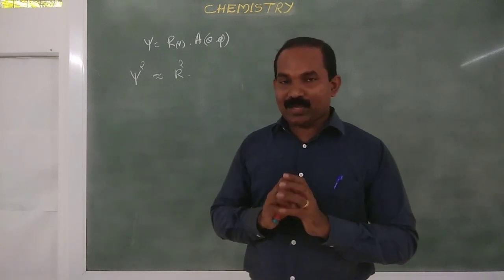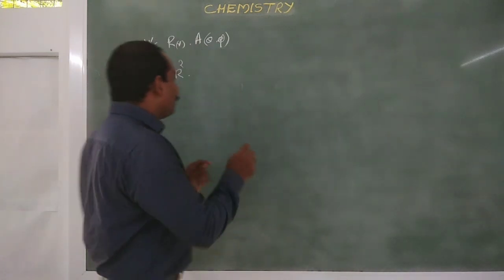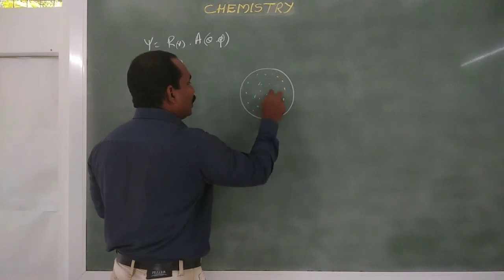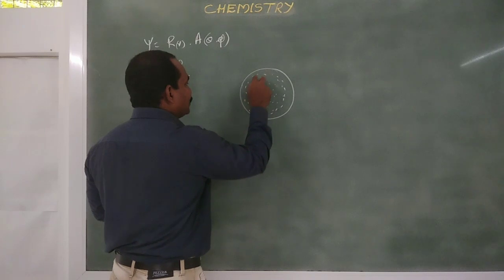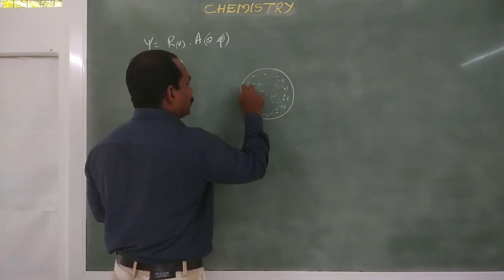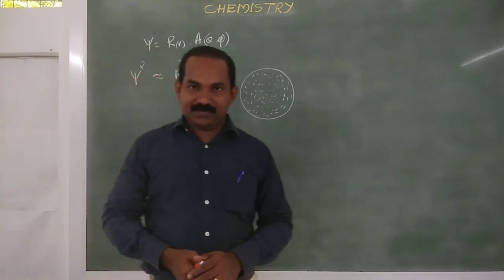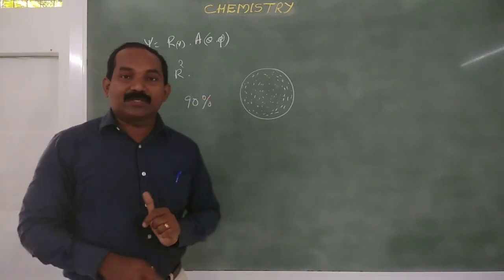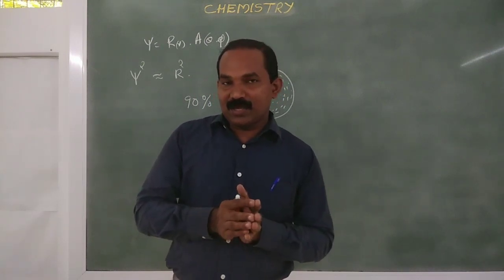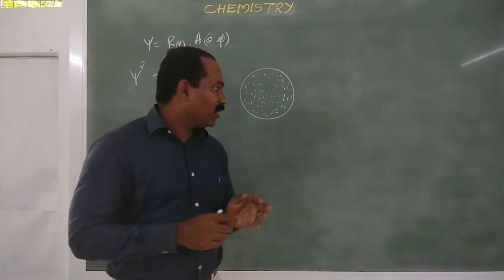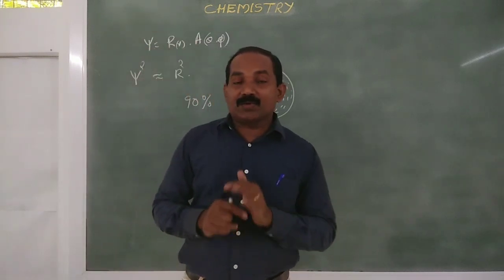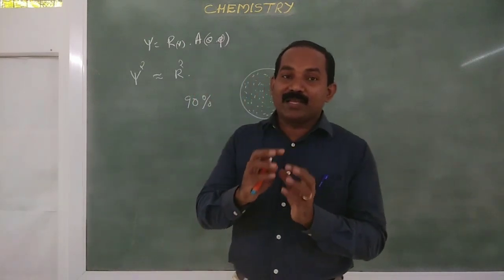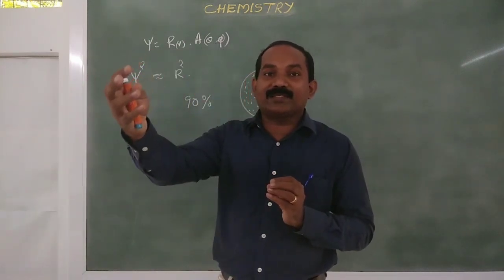For s orbital, the probability density is around the nucleus. We cannot say 100% probability — the probability is maximum at 90%. The probability of the electron around the nucleus we cannot say 100%; the maximum is 90%. All the s orbitals are spherically symmetrical — that is, the probability density of the electron in all directions from the nucleus is the same.